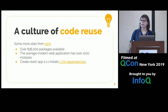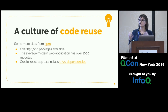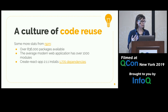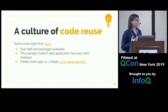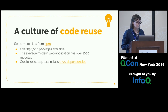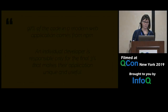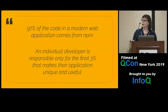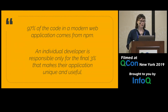If we look at something like Create React App, which bundles together all of the dependencies you need as a beginning React developer, that has over 1,700 dependencies. So there's a lot of code reuse going on. NPM says that 97% of the code in a modern web application comes from NPM.